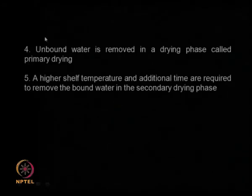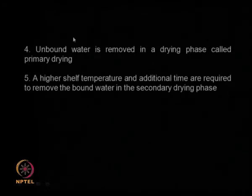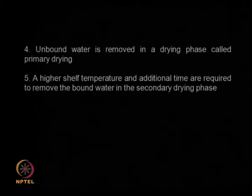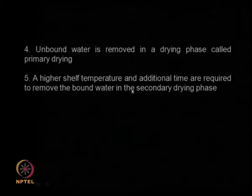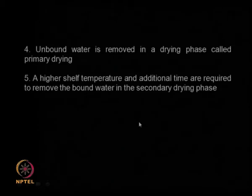By doing this, we remove all the unbound water — that is called primary drying. Later, we need to remove the bound water. We slightly raise the temperature and keep the pressure down, and by doing this we remove the bound water — that is called the secondary drying phase.